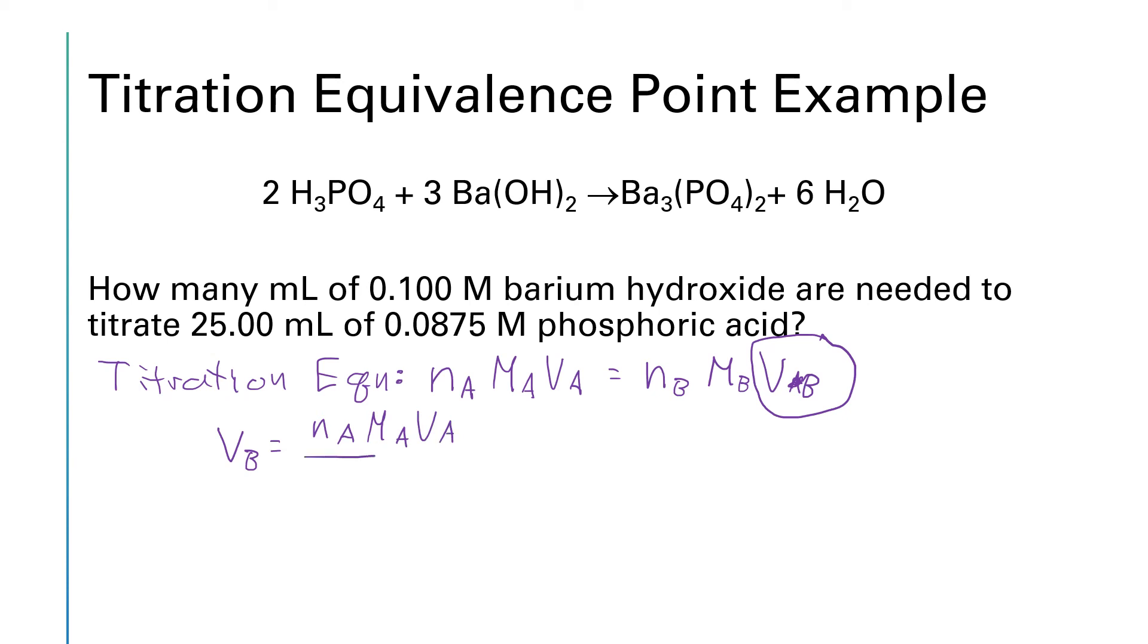So that'll give me n sub a times m sub a times v sub a all divided by n sub b and m sub b. Okay so what is n sub a? n sub a is the three on hydrogen in our formula. n sub b is the two on hydroxide in our formula. All right so let's go ahead and plug those numbers in. n sub a was three, down in the denominator n sub b was two, the molarity of the acid well it was given as 0.0875 molar and the volume of the acid was 25 milliliters and then for m sub b we've got 0.1.